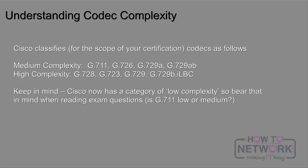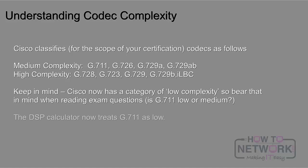When reading exam questions, keep in mind whether it's asking if G.711 is low or medium — obviously it's low — or if it's asking medium or high, then it's medium. It depends on whether you're using the old definition or the new definition. G.729B or ILBC takes a lot more heavy lifting, whereas straight up native G.711 is lighter because you're not compressing anything — you're just sampling and packetizing it. The DSP calculator now treats G.711 as a low complexity codec.